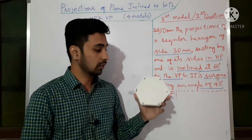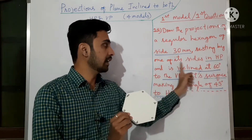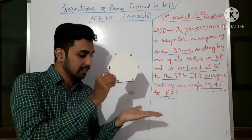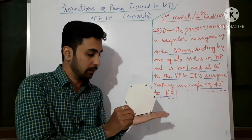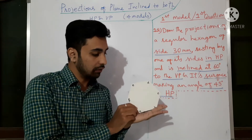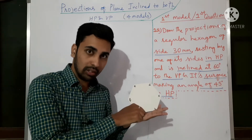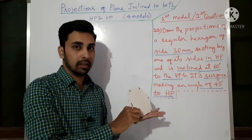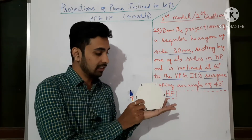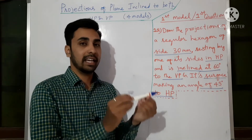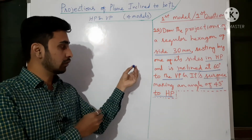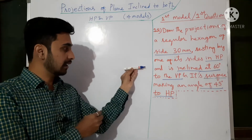Edge AB, or any side, is 30 mm — all sides of the hexagon are 30 mm. It is resting by one edge in HP. Assume my hand is the horizontal plane and this board is the vertical plane. The hexagon is resting by its edge on HP. Then it is inclined at 60 degrees to the VP. The edge by which it is resting — this edge only — with respect to VP is making 60 degrees. Now assume edge AB is resting on HP; treat it as a line. With respect to VP, it can be parallel or perpendicular.